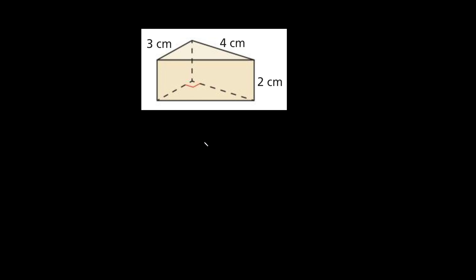Here's our next example and as you can see now we have a triangle. So the formula is going to be a little bit different. Here we can say that the volume is going to be equal to the base times the height, where the base is basically just the area of one of the faces and the height is going to be that third dimension that you didn't use. So let's find the area of this triangle right here on top.